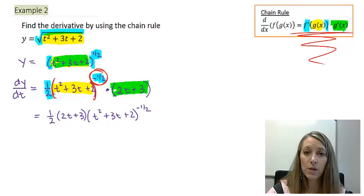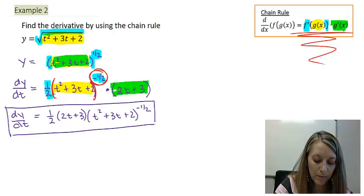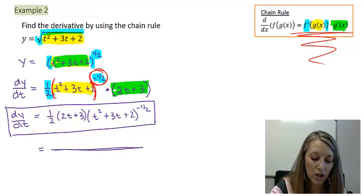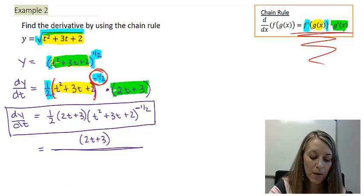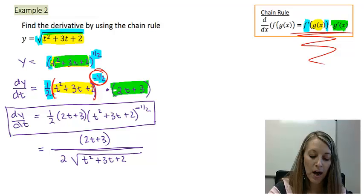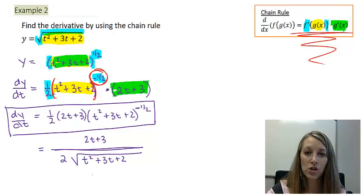If you choose to hand it in at that step, that is a perfectly acceptable final answer. But I encourage you to rewrite it without negatives and without fractions in exponents. My 2t plus 3 has a positive exponent so it stays on top. The one-half moves my 2 to the bottom, and the negative exponent moves the parenthetical expression to the denominator. Rewriting the one-half power as a square root gives us 2t plus 3 over 2 times the square root of t squared plus 3t plus 2.